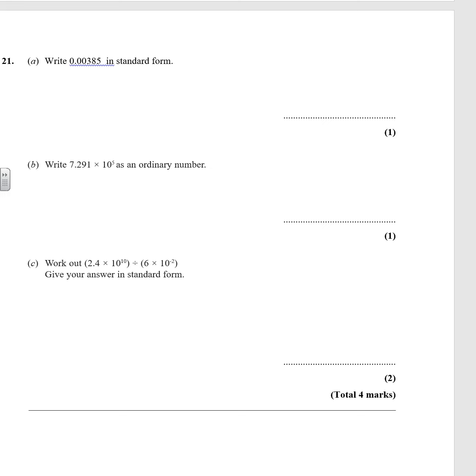Question 21. Right, standard form. We've got to put 0.00385 in standard form. So it's got to be between 1 and 10 times 10 to the power of something. So this is times 10 to the power of minus 3. Very small number. So it would need to be basically divided by 10 three times.